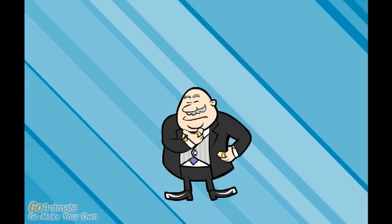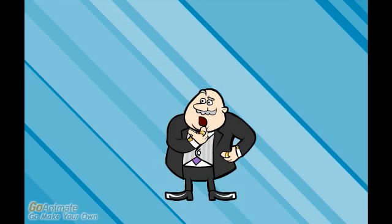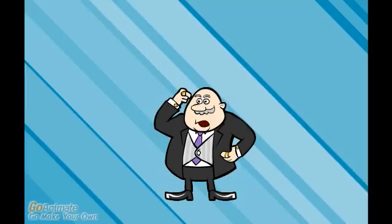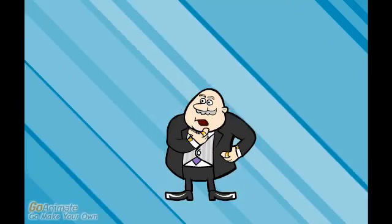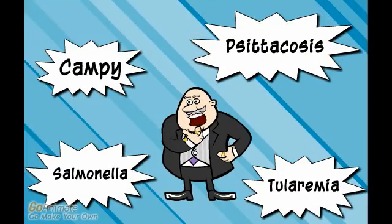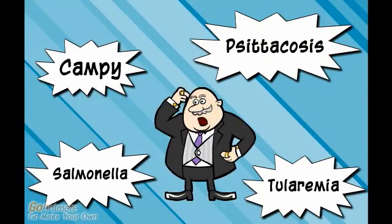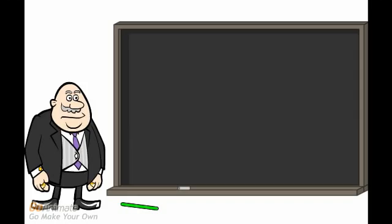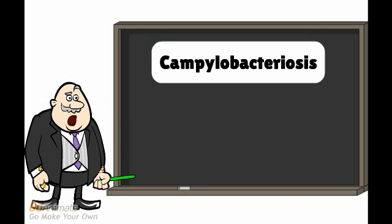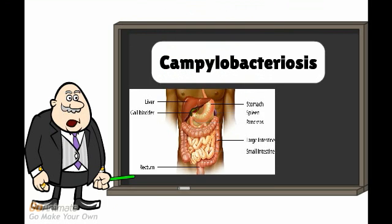Most of the zoonotic diseases are caused by a type of pathogenic agent known as bacteria. Campylobacteriosis, psittacosis, salmonella, and tularemia are types of bacterial diseases in animals. Campylobacteriosis is a disease which causes mild to severe infection of the gastrointestinal system.